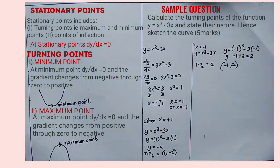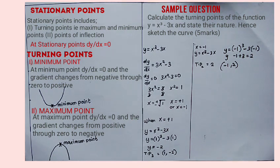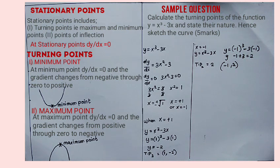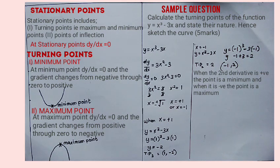We have now found the turning points. We need to find the nature of the turning points. To find the nature, you use the second derivative. When the second derivative is positive, the point is a minimum. And when the second derivative is negative, the point is a maximum.